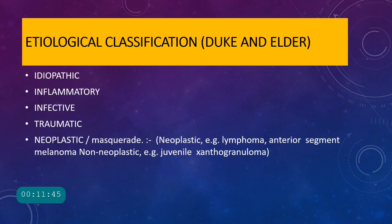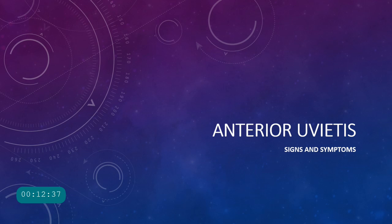The etiological classification by Duke-Elder broadly categorizes uveitis as: idiopathic (unknown cause); inflammatory, associated with systemic conditions such as sarcoidosis, sympathetic ophthalmia, VKH syndrome, and juvenile arthritis; infective, secondary to viral or bacterial infections; traumatic uveitis; and neoplastic or masquerade uveitis, where conditions like lymphoma, anterior segment melanoma, or juvenile xanthogranuloma mimic uveitis and are called masquerade syndromes.